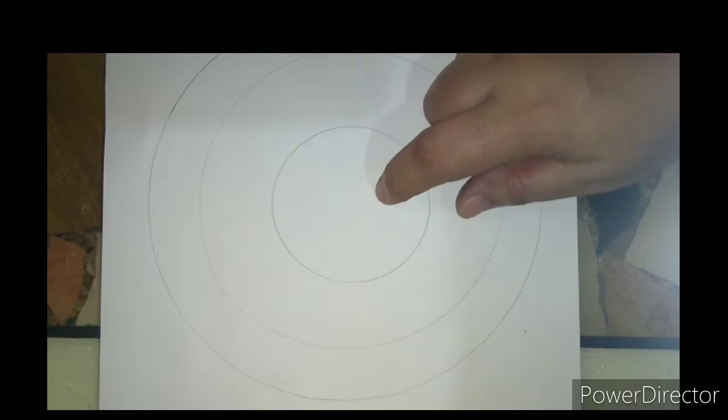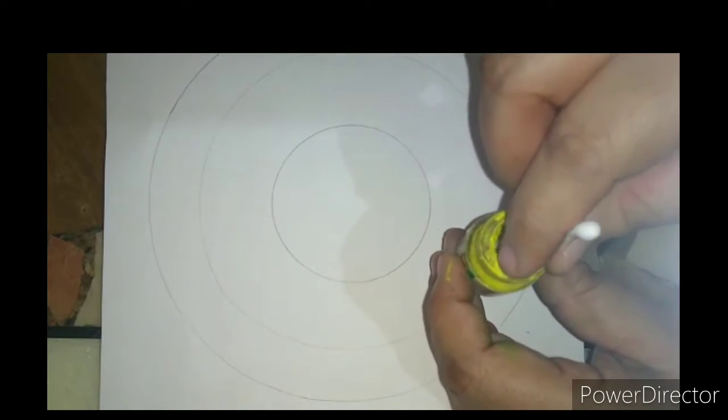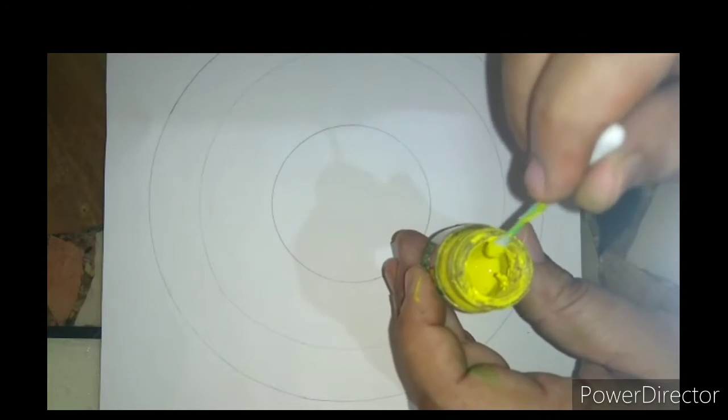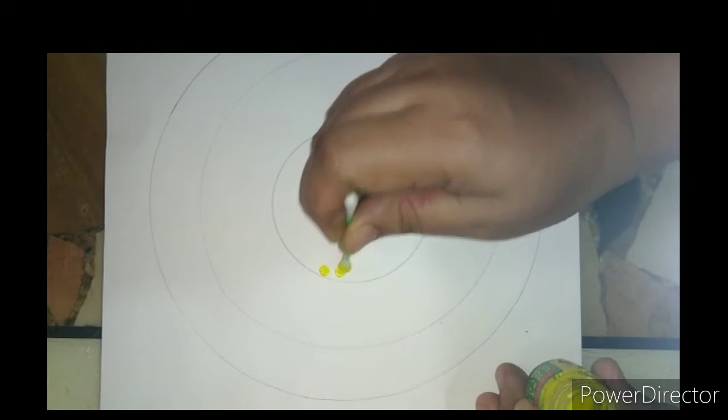Now here, I am using yellow color. Now we will start. We will dip the cotton in the color and dab it.